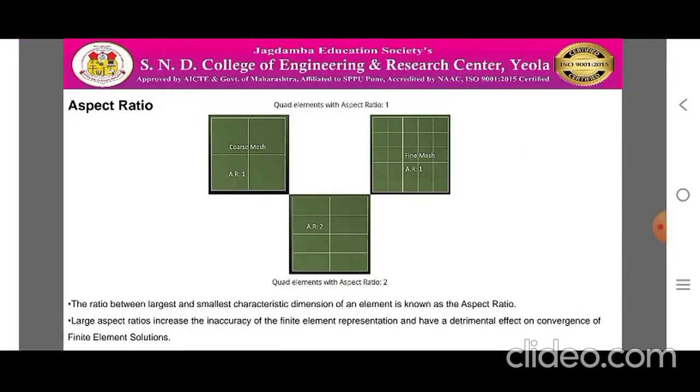The aspect ratio. The figure shows the elements with different aspect ratios. The ratio between largest and the smallest characteristic dimension of an element is known as aspect ratio. Large aspect ratios increase the inaccuracy of the finite element representation and have a detrimental effect on convergence of finite element solutions. An aspect ratio of 1 is ideal but cannot always be maintained. In general, the aspect ratios are maintained between 1 to 5 at critical areas in a domain where the derivatives of field variable are significant. Along with the solution accuracy, poor element shapes will often cause convergence problems in non-linear analysis also.